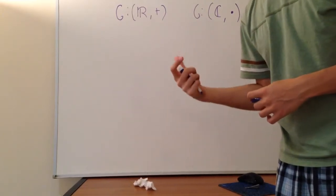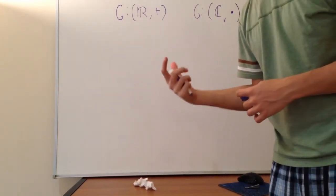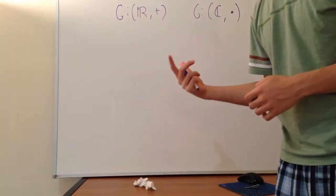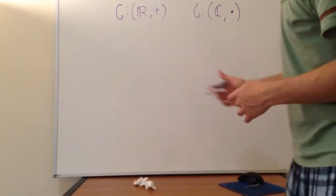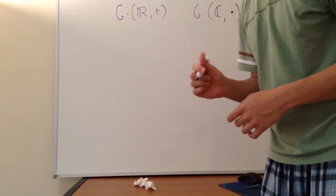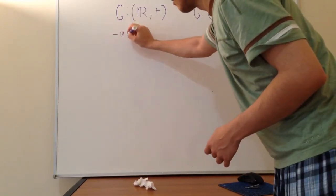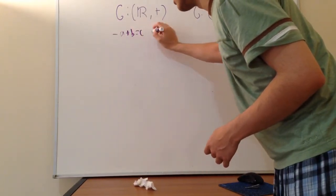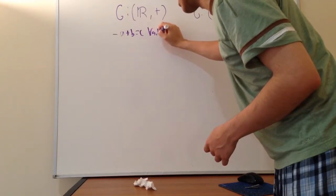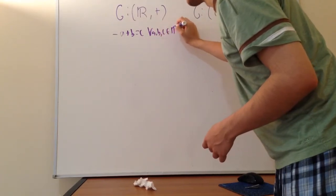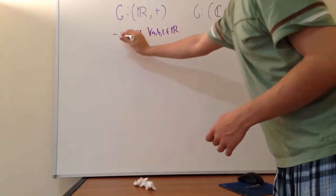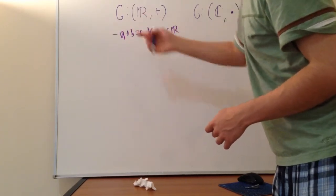I'm claiming that both these are groups. In order to show they are groups, we have to check if the four axioms are satisfied, those four rules I talked about in my first video. For the first property, we have to have closure.